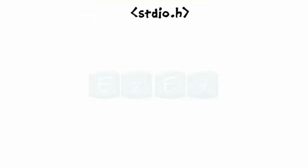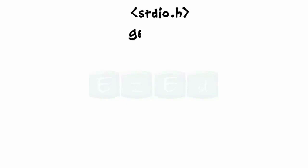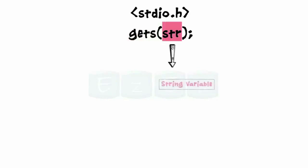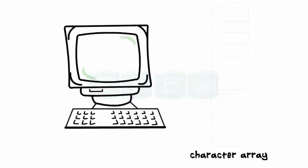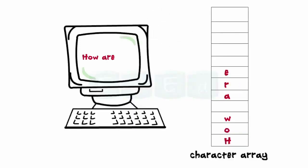We can also read a line of text using the built-in function gets, which comes under the stdio.h header file. The syntax is the function name with one parameter, where str is a string variable. This function reads a string from the terminal until a new line character is encountered and automatically assigns a null character at the end.